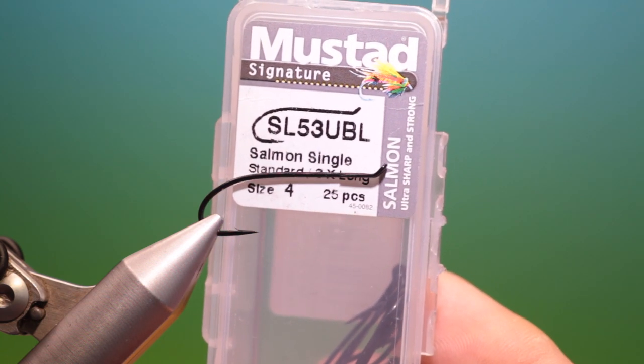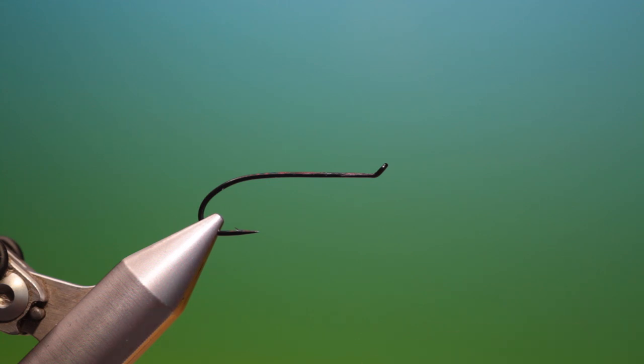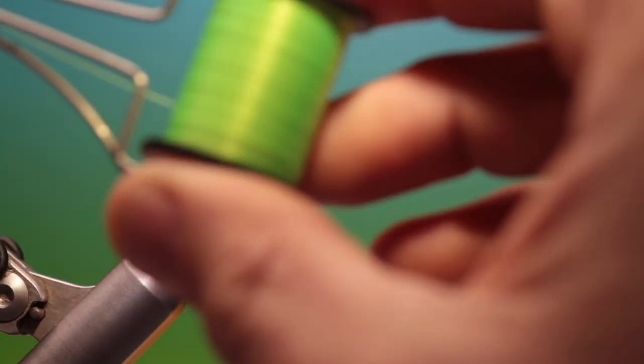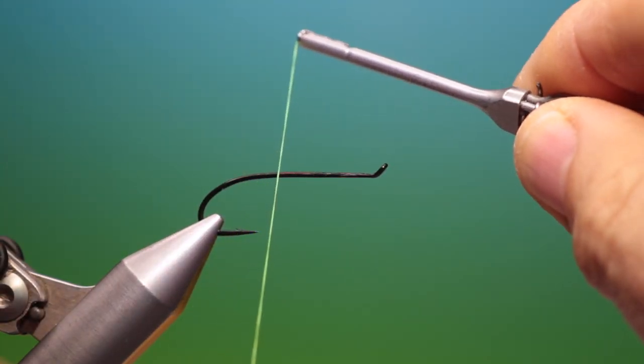We'll start with the Mustard SL53 single salmon size 4. This is the green machine, I've got a fluorescent green tying thread.